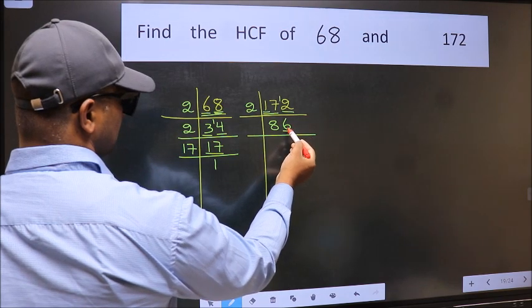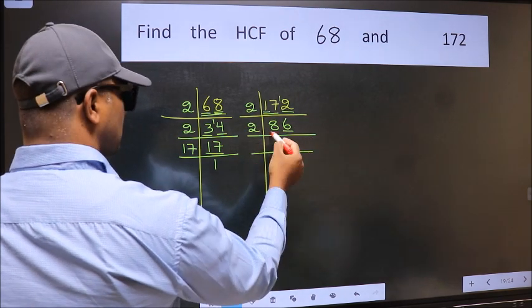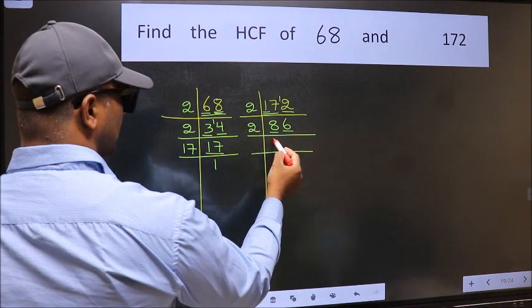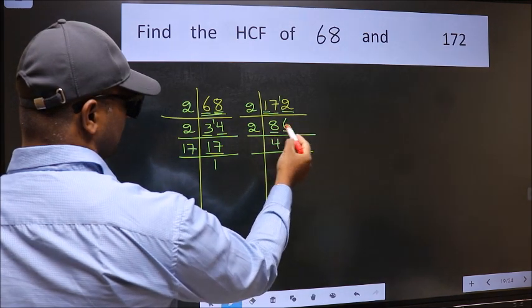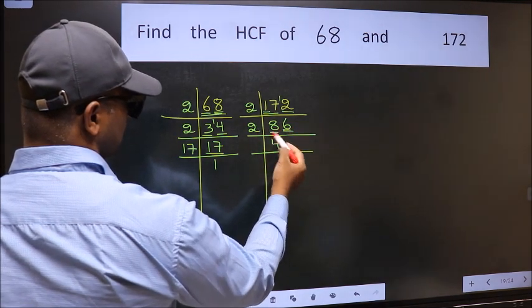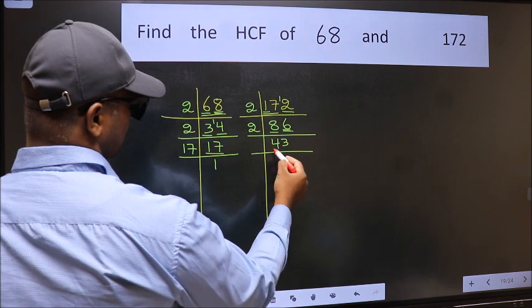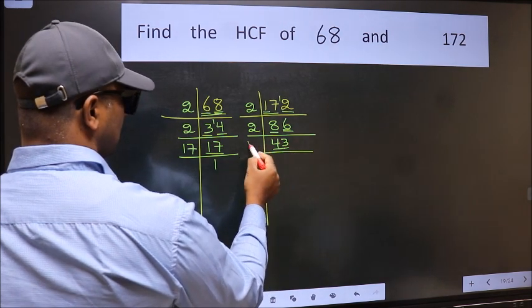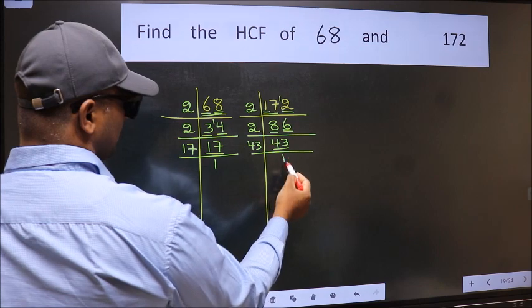Now last digit 6 is even, so take 2. First number 8, when do we get 8 in 2 table? 2, 4, 8. The other number 6, when do we get 6 in 2 table? 2, 3, 6. Now 43, 43 is a prime number, so 43 once is 43.